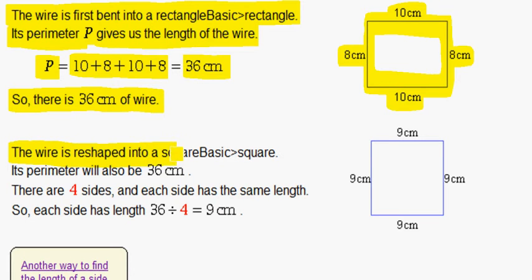The wire is reshaped into a square, basic square. Its perimeter will also be 36 centimeters.